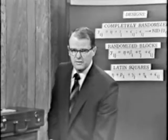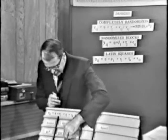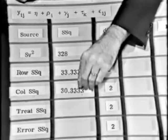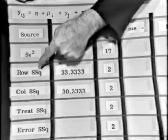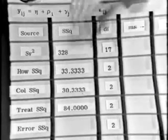Well, now, I've done that for the row, the column, and the treatment sum of squares. The row sum of squares in that example turned out to be thirty-three and a third. The column sum of squares, the furnace location sum of squares turned out to be thirty and a third. The treatment sum of squares turns out to be eighty-four.